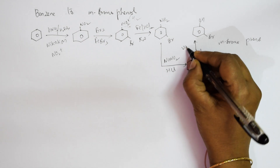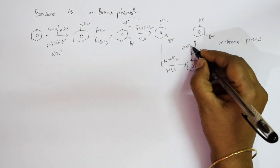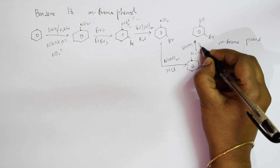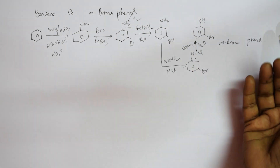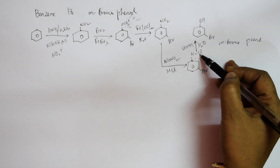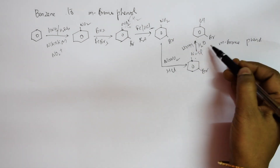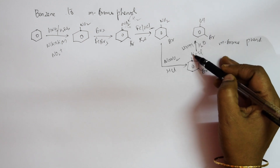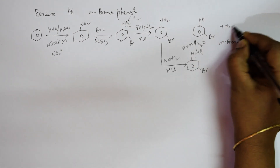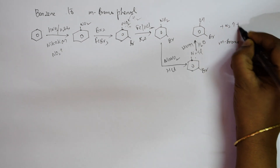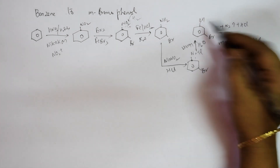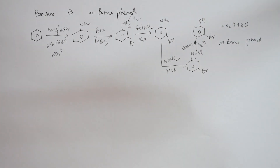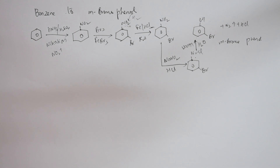The N2Cl diazonium salt is then warmed in the presence of water. Nitrogen gas escapes, HCl comes out, and OH is left behind. That gives us meta-bromophenol — the conversion is complete.